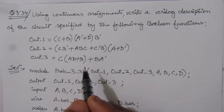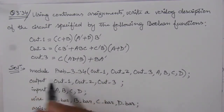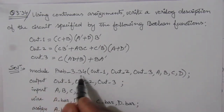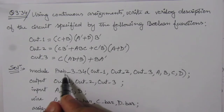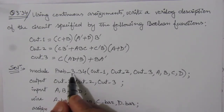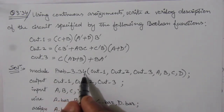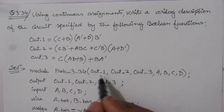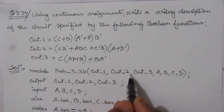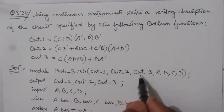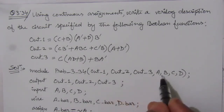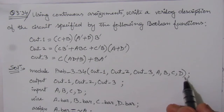We can write the Verilog description without drawing the circuit. So first of all, as usual, we will write 'module prob_3_34'. Within the bracket, we have to write the outputs and inputs: out_1, out_2, and out_3 — these are the outputs — and A, B, C, D — these are the inputs.